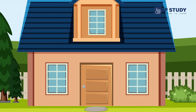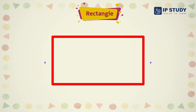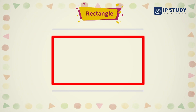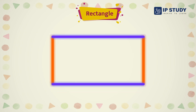Have you seen the door is in which shape? The door is in rectangle shape. A rectangle has two small sides and two long sides. Opposite sides are equal for a rectangle.